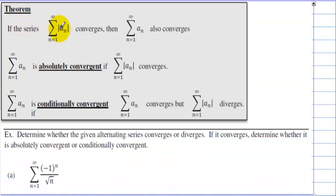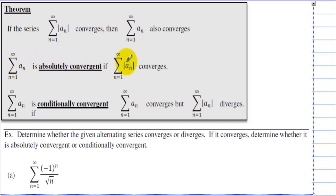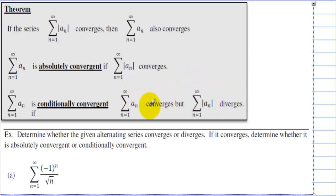Theorem: if the series of absolute values |a_n| converges, then the original series also converges. So if you can show that something converges absolutely, then the given series converges. A series a_n is absolutely convergent if the series of |a_n| converges. A series a_n is conditionally convergent if the series converges but the series of |a_n| diverges. In other words, if |a_n| diverges, we still have to check whether the original series can still converge — but it would only converge conditionally.